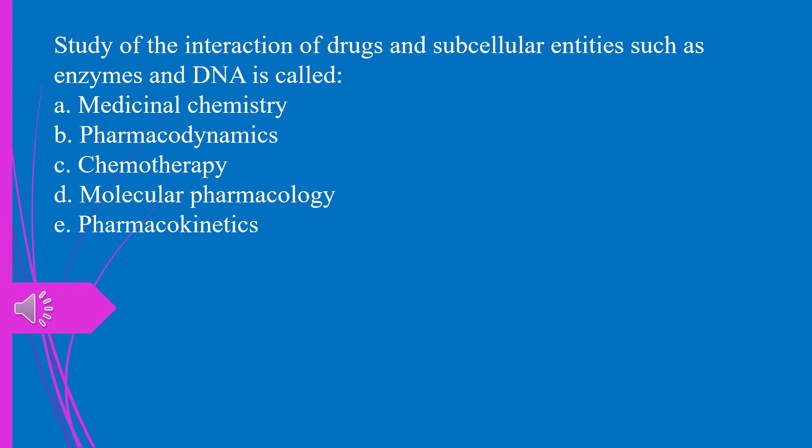Question 53. The study of the interaction of drugs and subcellular entities such as enzymes and DNA is called: a) medicinal chemistry, b) pharmacodynamics, c) chemotherapy, d) molecular pharmacology, e) pharmacokinetics. The answer is d, molecular pharmacology.